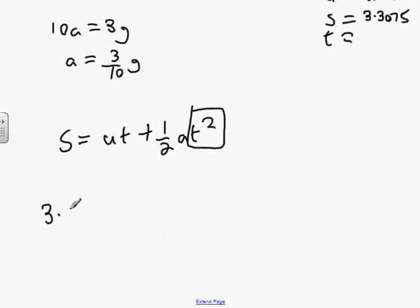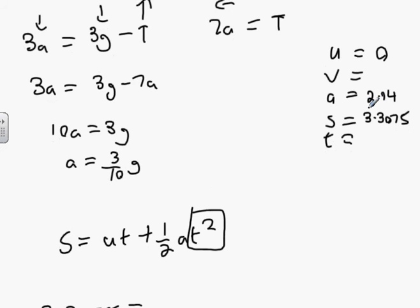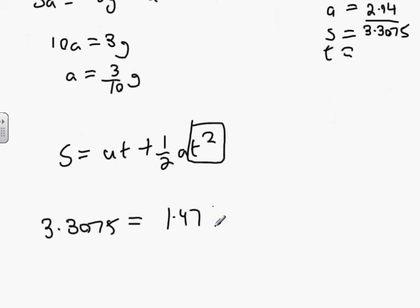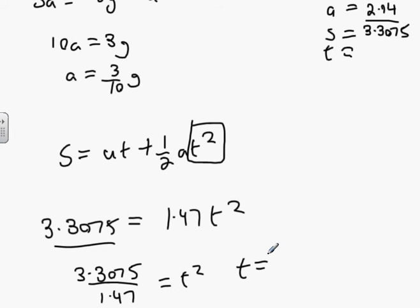So s is 3.3075 equals a half of a. What's a half of our acceleration? 1.47. T squared. Divide this by 1.47 and then square root it. Any takers? 1.5 seconds. That's a very convenient number.